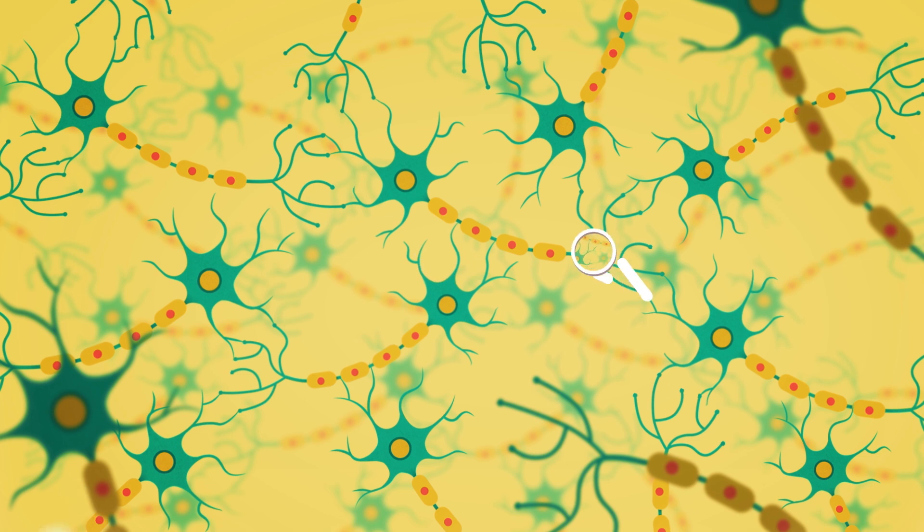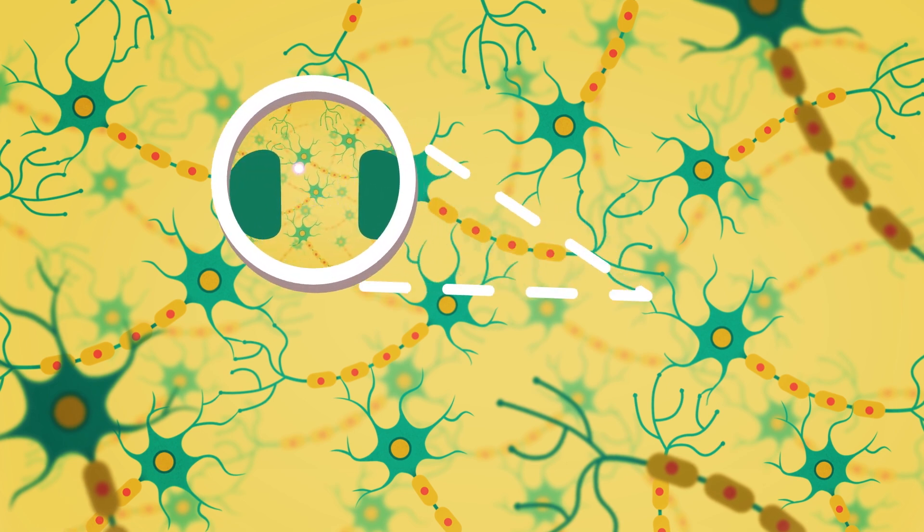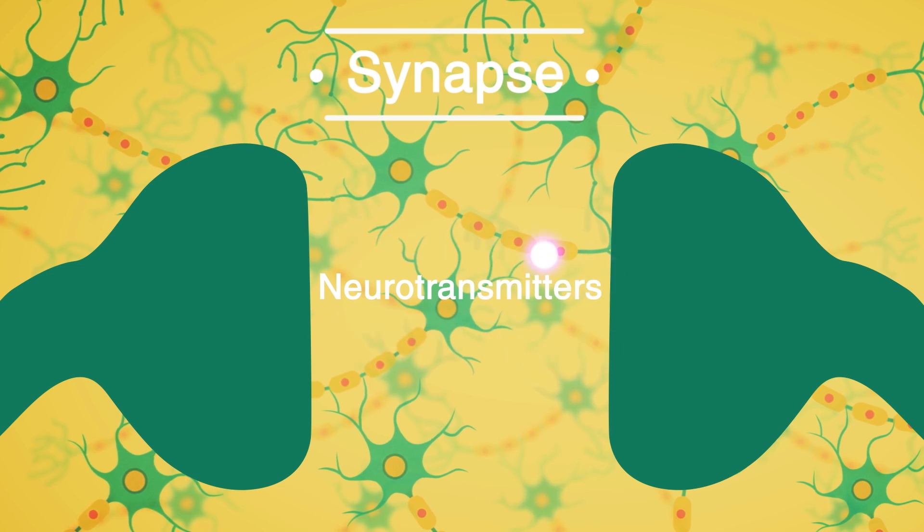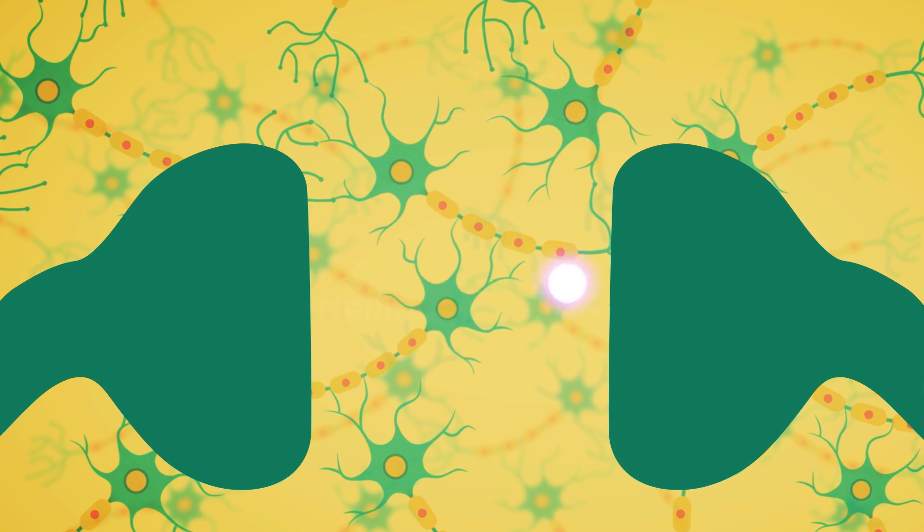At a synapse, chemicals called neurotransmitters allow the electrical impulses to pass from one cell to another. This is the basis for how the brain works.